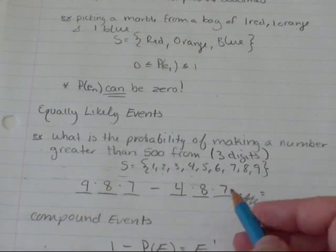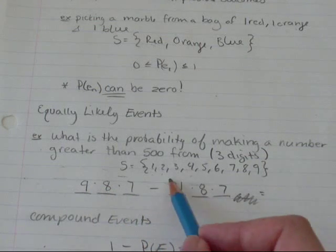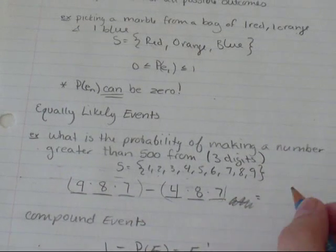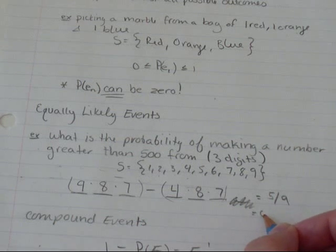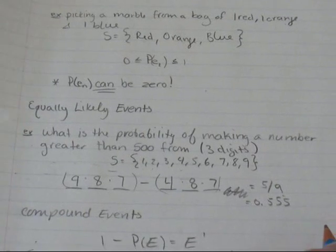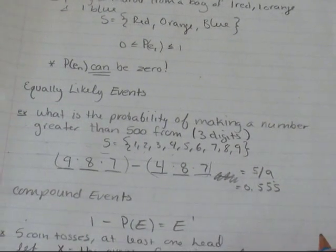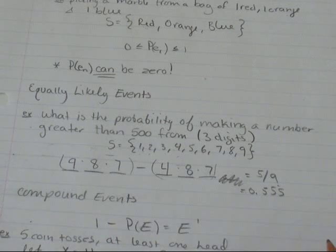So, when you do nine times eight times seven minus four times eight times seven, you should get five over nine. And as a decimal, that is 0.555 repeating. In this case, since it's a repeating decimal, it's more accurate just to leave it as a fraction. So, that's what I would do.